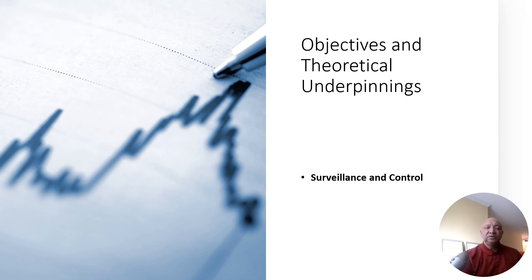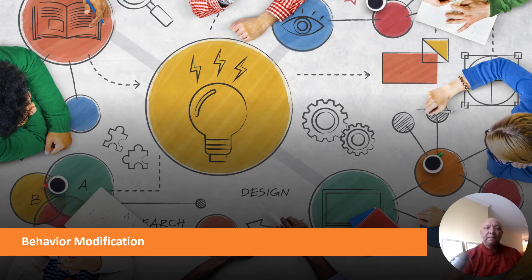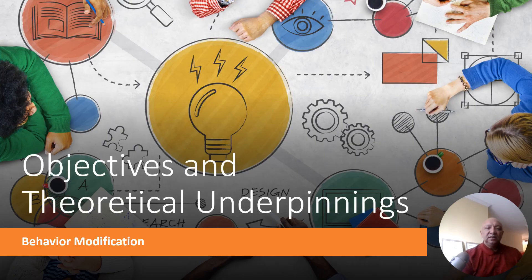Another feature is an objective and theoretical underpinning. The first is surveillance and control: the primary objective of the Panopticon is to enable efficient surveillance with minimal resources, ensuring that a single guard can monitor many inmates. The second objective is behavior modification: the constant possibility of observation is intended to promote self-discipline and good behavior among inmates, as they are never certain when they are being watched.